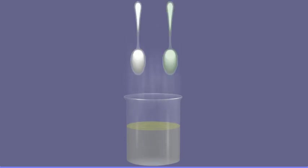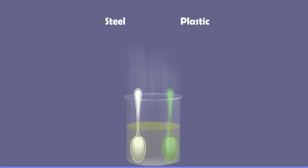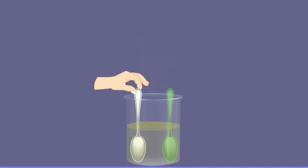Activity: Take a beaker and fill it half with hot soup. Place a metal spoon (steel) and a plastic spoon in the beaker. After about two minutes, touch the top ends of both spoons. The metal spoon feels quite hot, but the top end of the plastic spoon does not feel hot. Heat from the hot soup flows easily through the metal spoon and reaches its other end, but heat does not flow easily through the plastic spoon, so its other end remains almost cold.